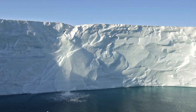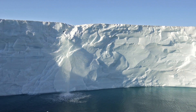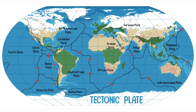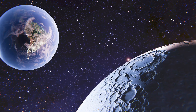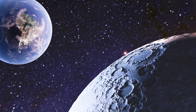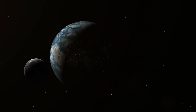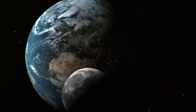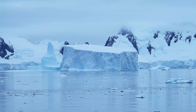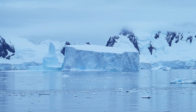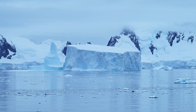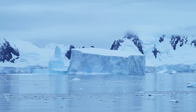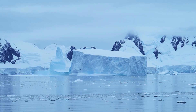Additionally, melting ice caps and tectonic shifts redistribute Earth's mass, subtly altering its gravitational field and the gravitational interactions between Earth and the Moon. Ice melting also contributes to rising sea levels, impacting Earth's gravitational balance.